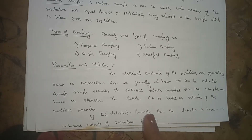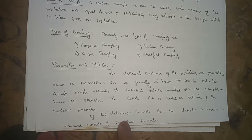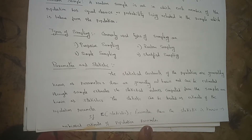Statistics can be treated as an estimate of the population parameter. If E(statistic) is equal to the parameter, then the statistic is known as an unbiased estimate of the population parameter.